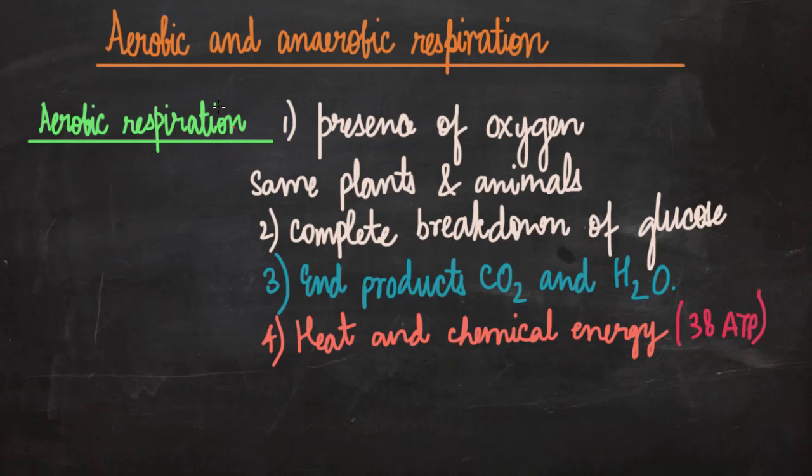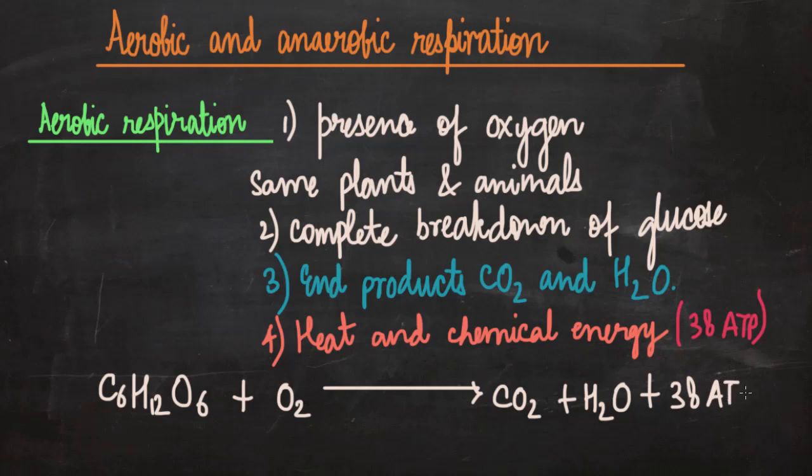So shall we write the reaction for aerobic respiration now? So we have glucose C6H12O6. It reacts with oxygen and it gives simpler substances like carbon dioxide, water plus 38 ATP energy. To balance this reaction I will write a 6 over here and I think 6 over here and 6 over here. So you can check this reaction is balanced now.